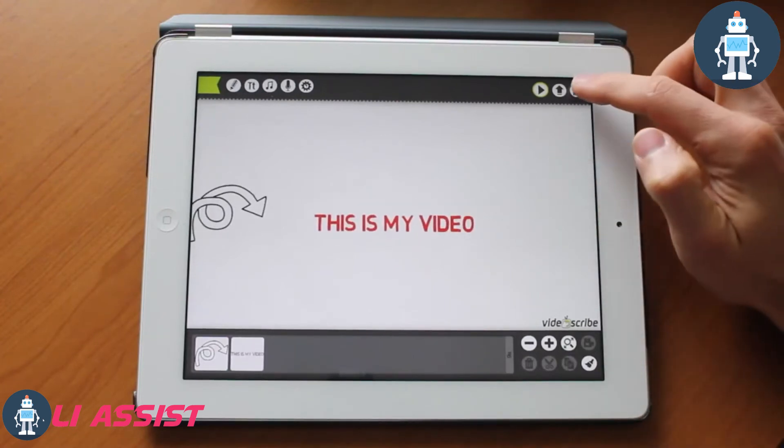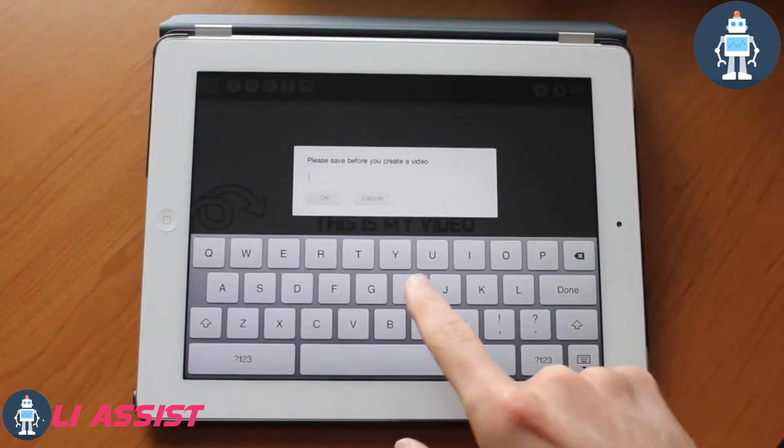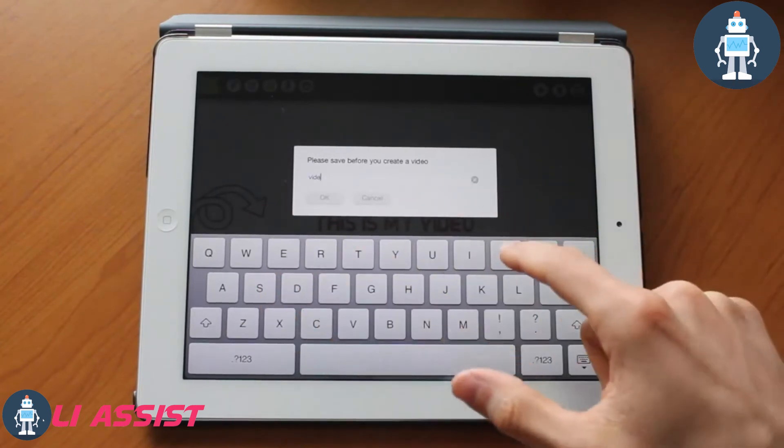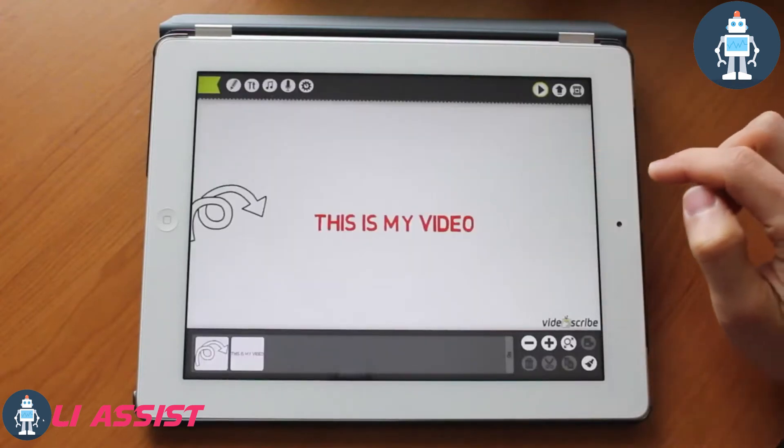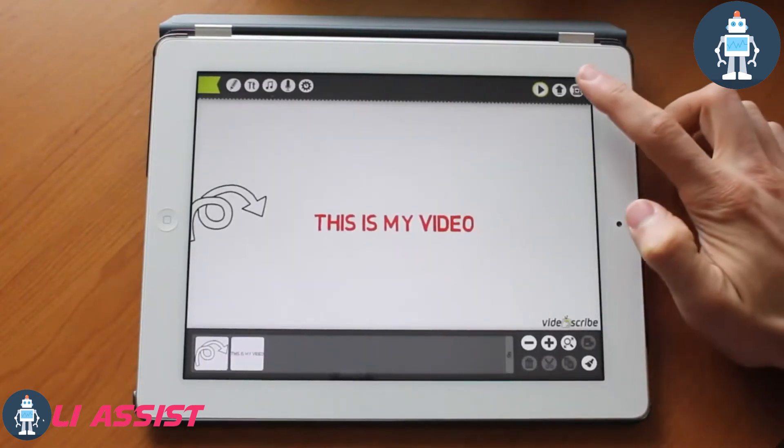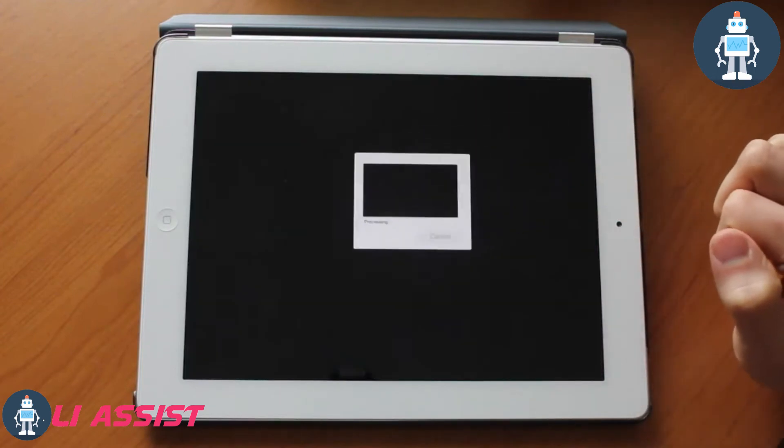After you're finished with everything, you could tap this little button on the top right. You have to save the video before you export it. You can tap the create video button and it will go ahead and process the video and create it.